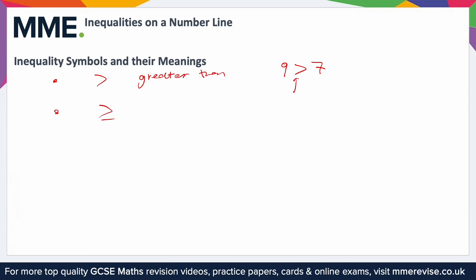Very similar to that is this symbol — it looks the same but notice the little line underneath. This means greater than or equal to. For example, saying 10 is greater than 10 doesn't make sense, but as soon as I introduce this line, 10 is greater than or equal to 10, which does make sense — it satisfies the inequality.